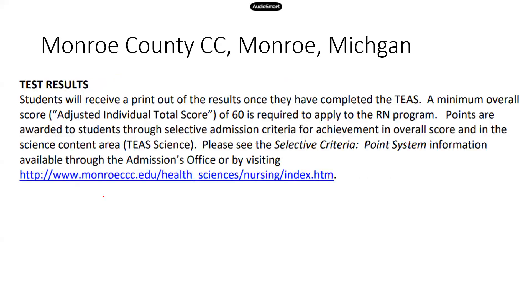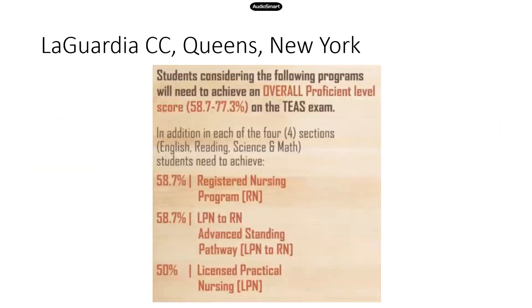Let's look at the minimum requirements, because this is something you have to be above in order to apply for a particular school. For Monroe County Community College in Monroe, Michigan, a minimum overall score of 60 is required to apply for the RN program, and it also talks about a point system covered in the next video. For a different community college in Queens, New York, requirements are different: for LPN the minimum is 50%, for RN it's close to 60%, and if you're doing the LPN-to-RN pathway program the minimums vary depending on which program you're doing.